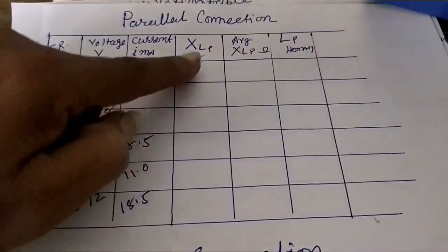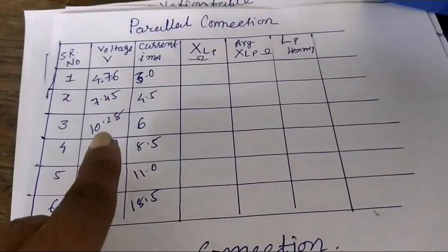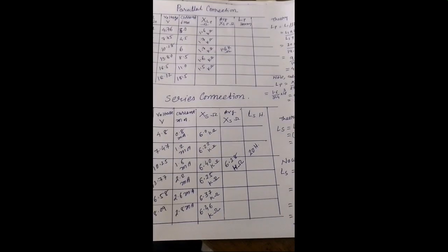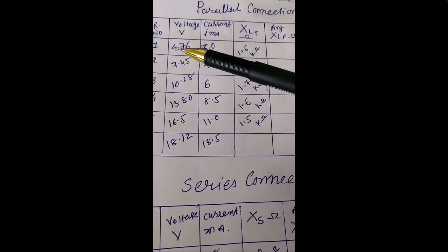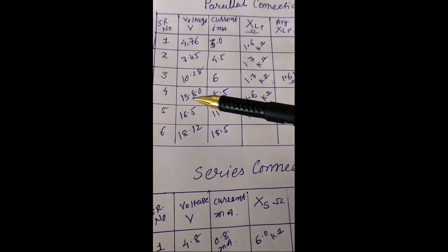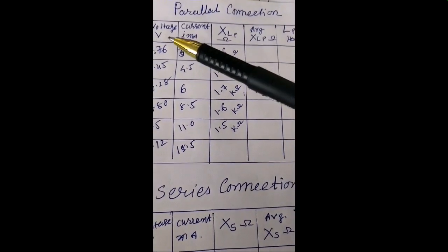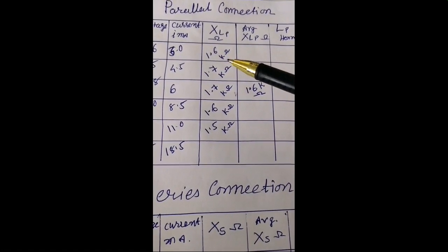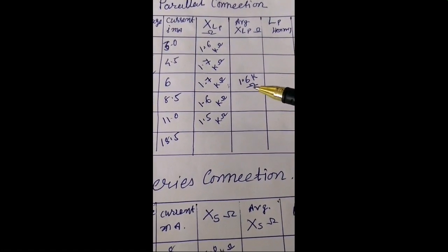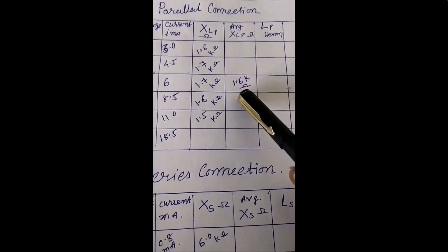Calculating the parallel reactance as voltage divided by current for each reading: 1.6, 1.7, 1.7, 1.6, and 1.5 kΩ, giving an average of 1.6 kΩ. So the reactance of the parallel inductance combination is 1.6 kΩ. The voltage 13.80 V divided by current 8.5 mA confirms these values.